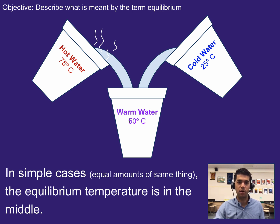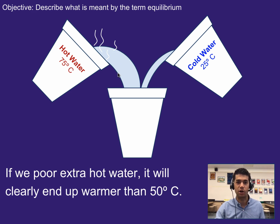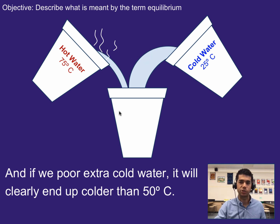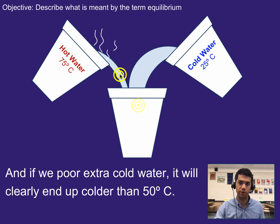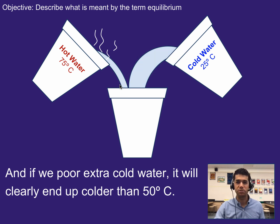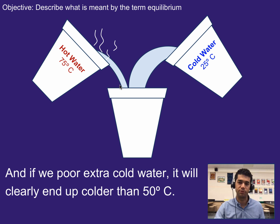That doesn't always happen. If we had extra hot water, the equilibrium temperature would end up being warmer than 50 degrees. And if we had extra cold water, it would end up being cooler than 50 degrees because we have more cold water than hot water. To figure out the temperatures in those cases, you would do a weighted average. This gets more complicated if instead of mixing water, we're mixing a piece of metal with water. Doing the math for the equilibrium temperature in that case requires additional equations and ideas that we'll explore in future videos.